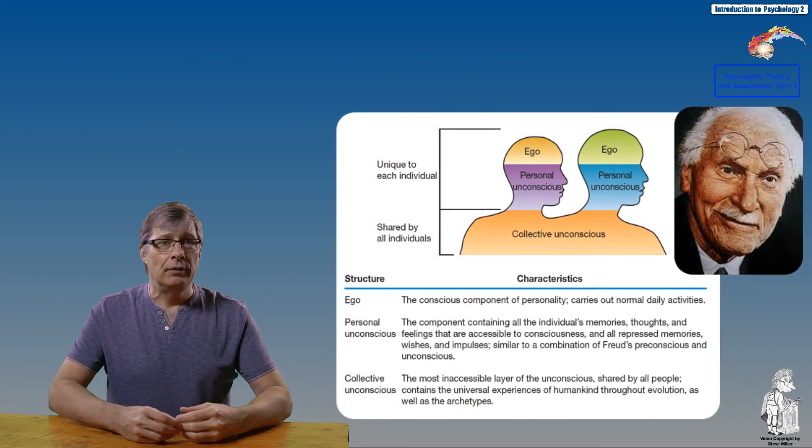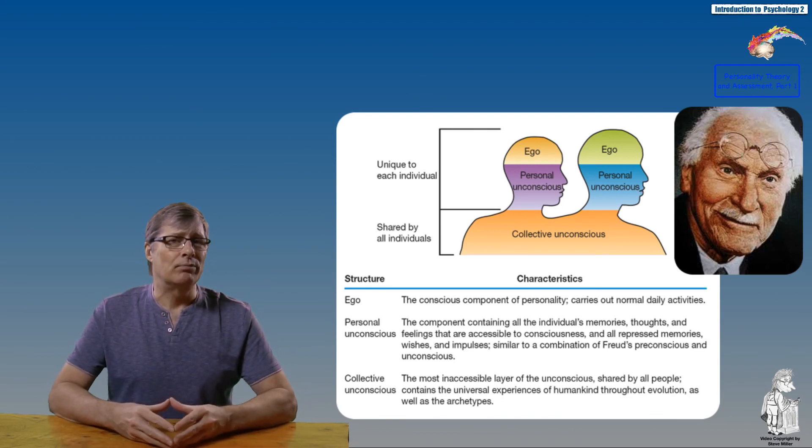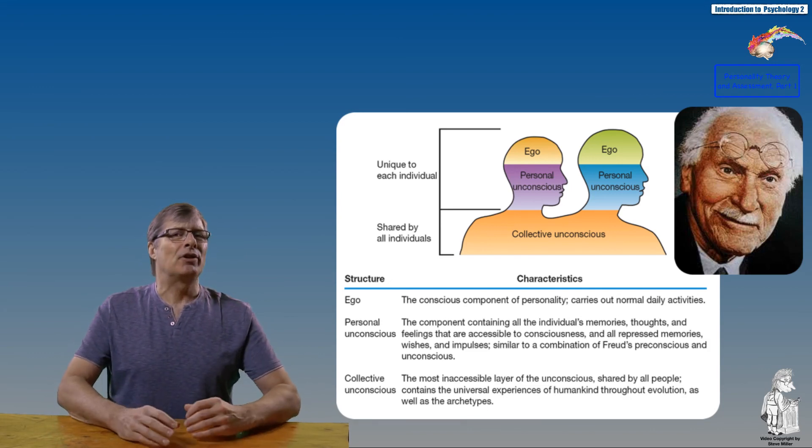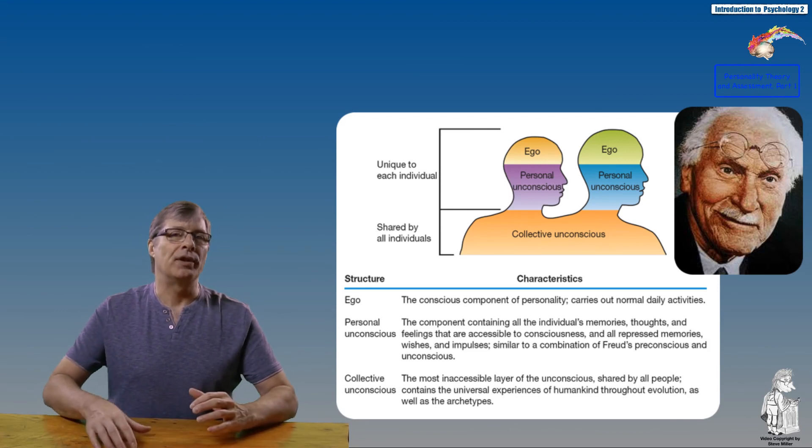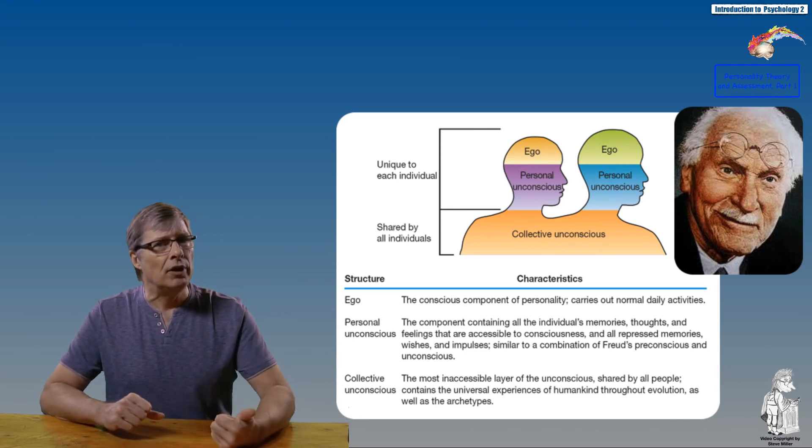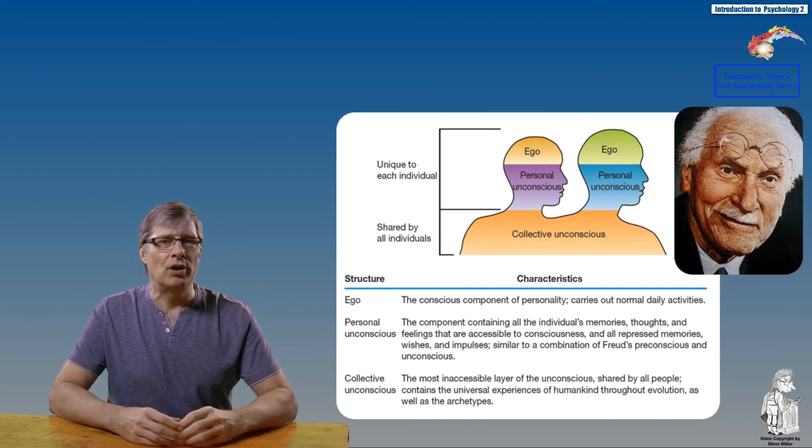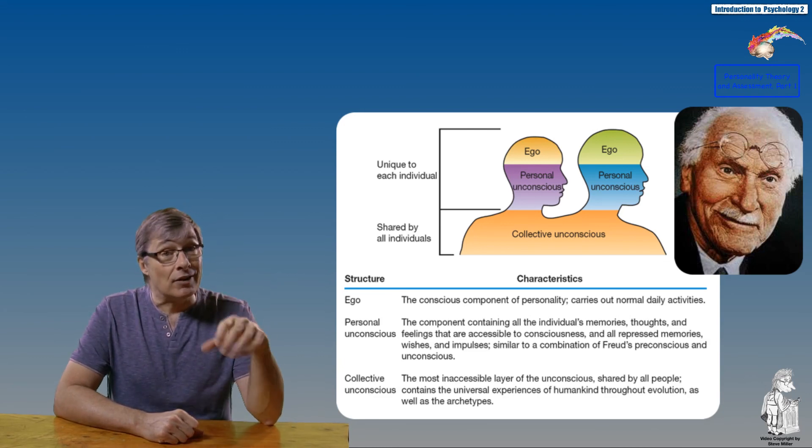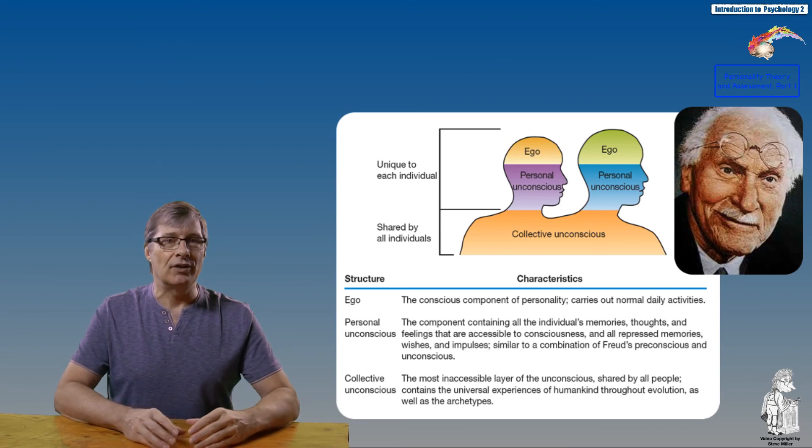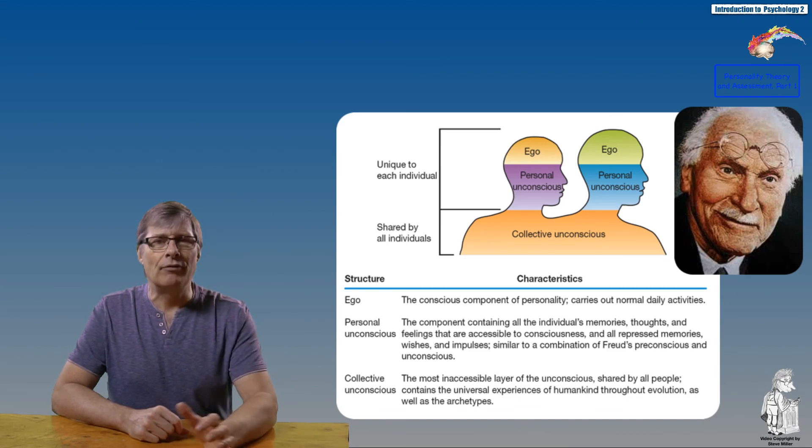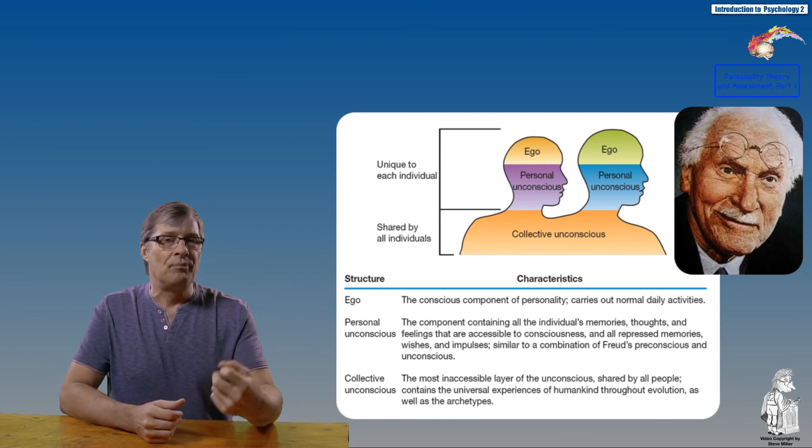Carl Jung was a student of Freud. He didn't support Freud's sexual instinct or that personality was mostly achieved by age five or six. Jung saw particular importance to middle age in personality development—that personality continued to develop. Jung described three components of personality: first, the ego, a conscious component that carries out our daily activities; second, the personal unconscious, which contains all experiences, thoughts, and perceptions accessible to the conscious as well as repressed memories—like a combination of Freud's pre-conscious and unconscious.